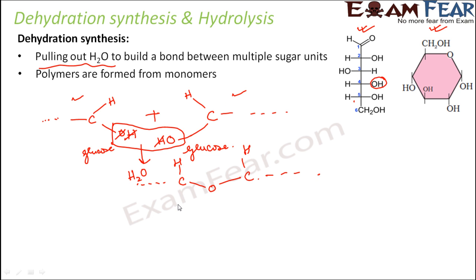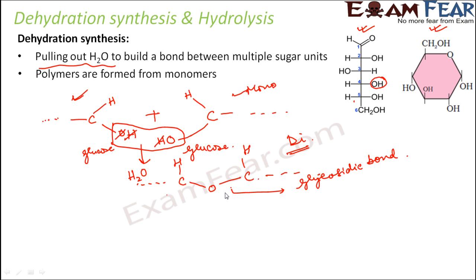This connecting bond is known as a glycosidic bond. The process by which two monosaccharides come together, one water molecule is removed, and a glycosidic bond is formed to produce a bigger sugar unit is called dehydration synthesis. The result here is a disaccharide, because it contains two units of glucose. We use the term 'sugar' synonymously with monosaccharide.